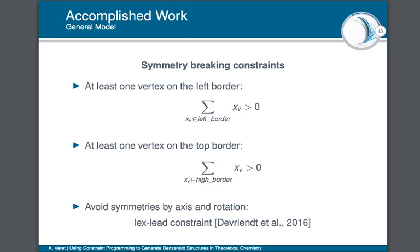At this point we are able to generate all the benzenoids of N hexagons for a given integer N, but we cannot yet generate non-symmetric molecules. To fix this we add 3 constraints to break symmetries: two constraints specifying that XG must have at least one vertex on the top and depth borders (enforced by a sum constraint on the associated variables), and the LexLead constraint to avoid symmetries by axes and rotations.